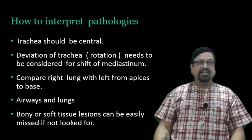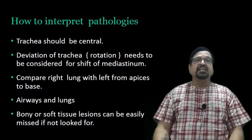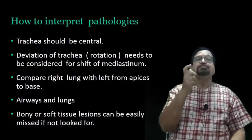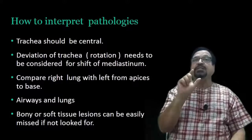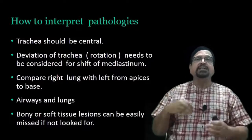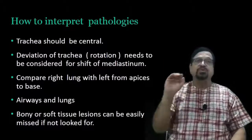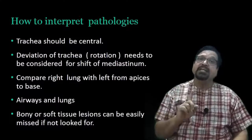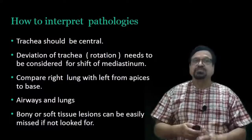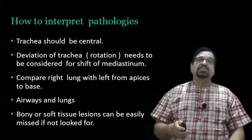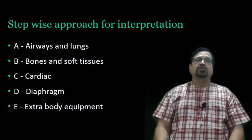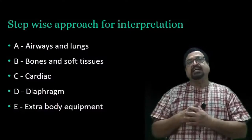A simple thing: the trachea should be central. Deviation of the trachea needs to be considered for shift of mediastinum. Now if the patient is rotated or the spine has abnormal curvature, you are going to get false interpretation of tracheal deviation. You have to compare right lung with the left lung - apex to apex, mid zone to mid zone, low zone to low zone. The hilar veins and lungs should be properly inspected, not only for X-ray interpretation but subsequently for tubes and catheters. We have to look for bony and soft tissue lesions, otherwise they will be missed easily.